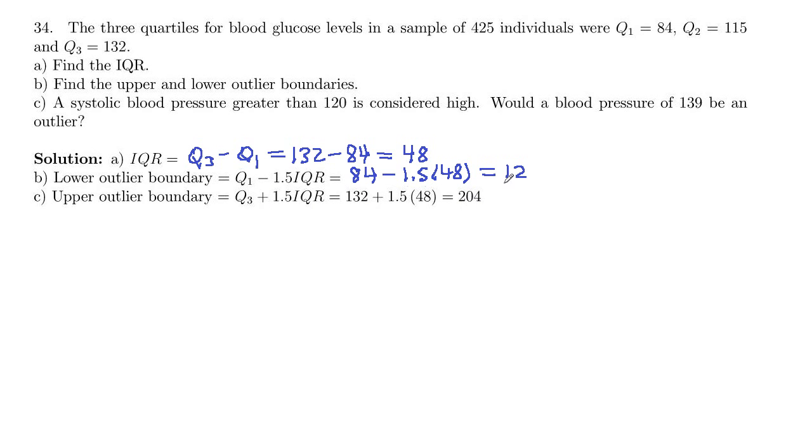So anything below 12 or above 204 is an outlier. So systolic blood pressure greater than 120 is considered high. Is 139 an outlier? No, it is not. 139 is not an outlier because it's not past the outlier boundaries.